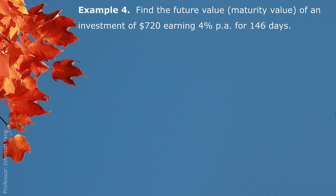Example 4: find the future value of an investment of $720 earning 4% for 146 days. We use the future value formula directly. We have principal, annual interest rate, and time period — 146 days divided by 365 to convert to years. We put them in properly and finish the calculation. The future value is $731.52.